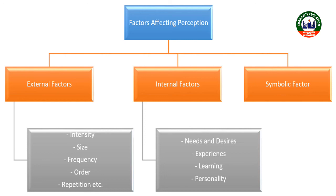So these were the factors that affect perception: first was perceptual learning, second was mental set, third was motives and needs, and fourth was cognitive style. This completes the topic of perception and attention. I hope you understood. That was all for today — thank you so much. If you have any queries, please let me know.